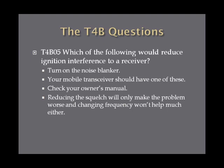Which of the following would reduce ignition interference to a receiver? The answer is to turn on the noise blanker. Your mobile transceiver should have one of these, and this is one of those owner's manual type of questions on how to operate it. Reducing the squelch to get rid of ignition interference probably isn't going to do you much good and might just blank out everything. Changing frequency won't help much either, because generally ignition interference crosses the whole spectrum. So, the answer is to turn on the noise blanker.